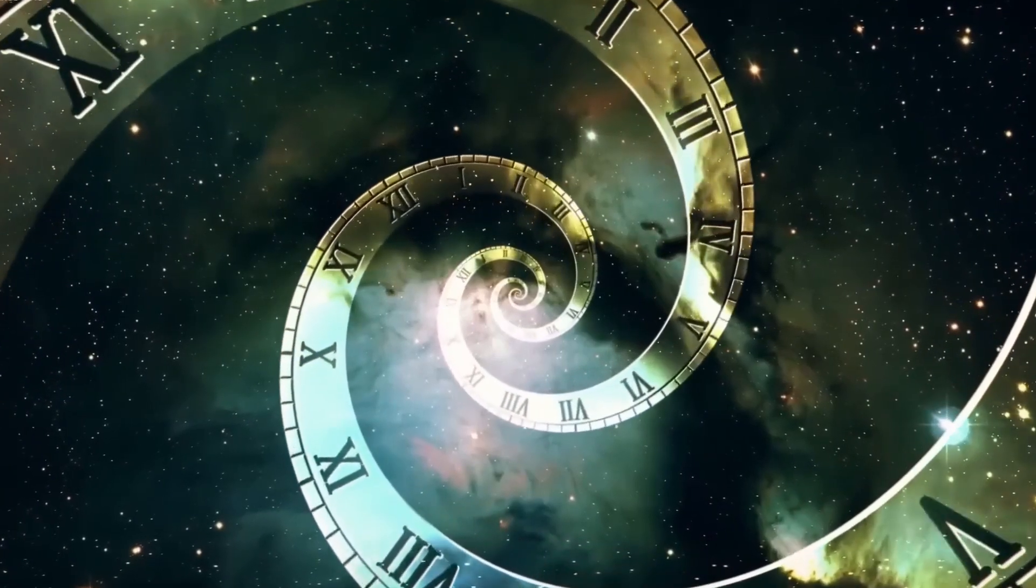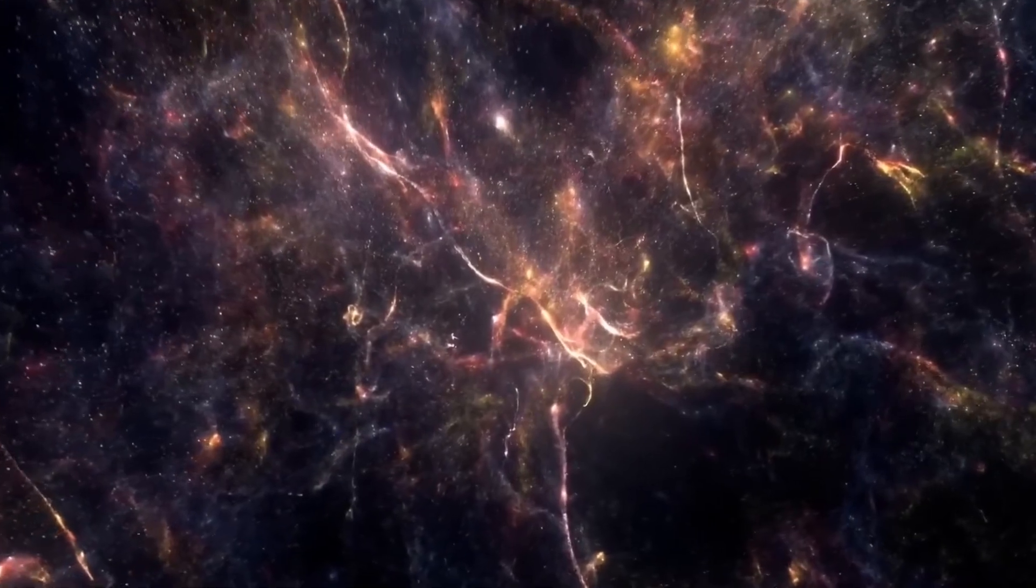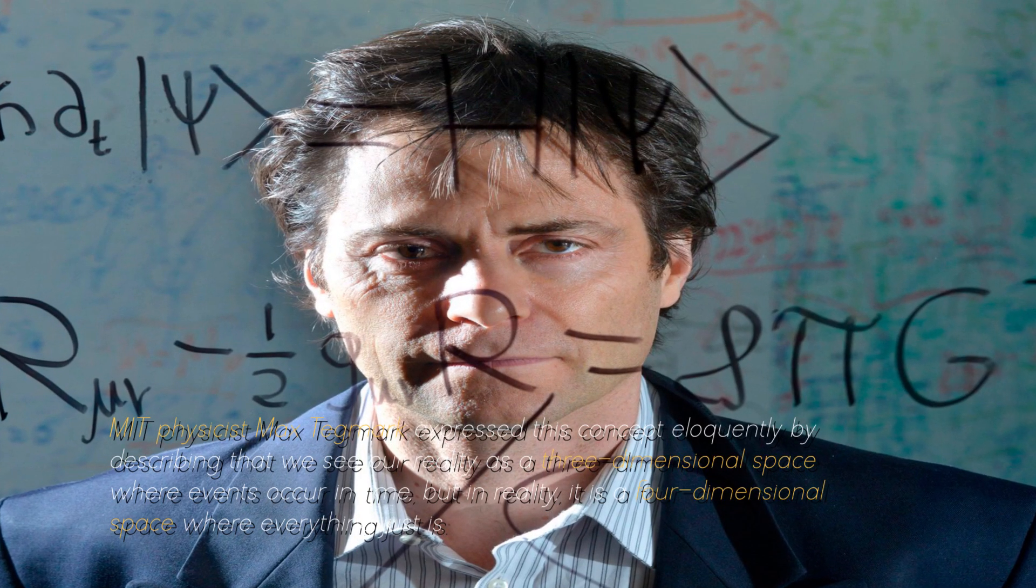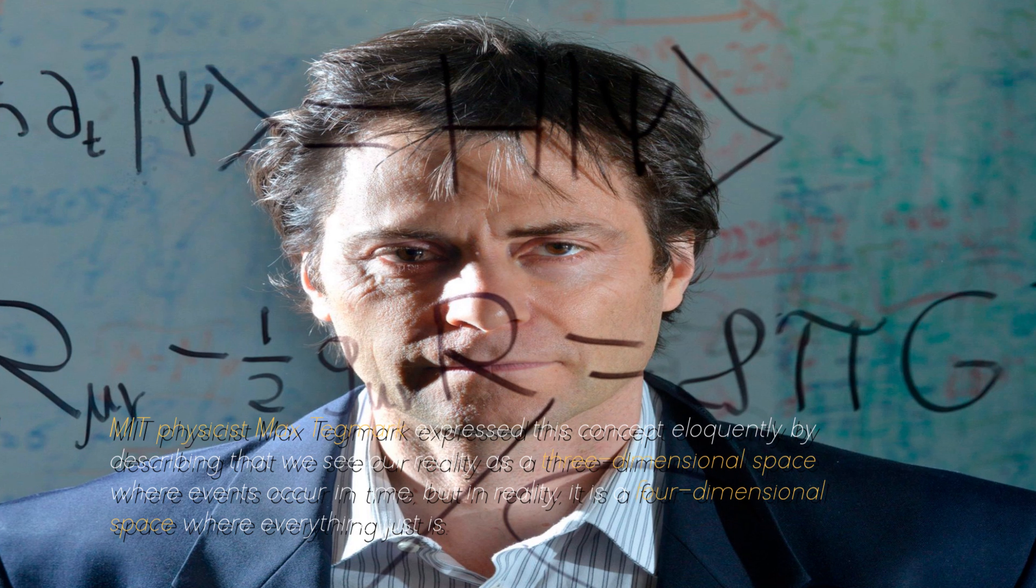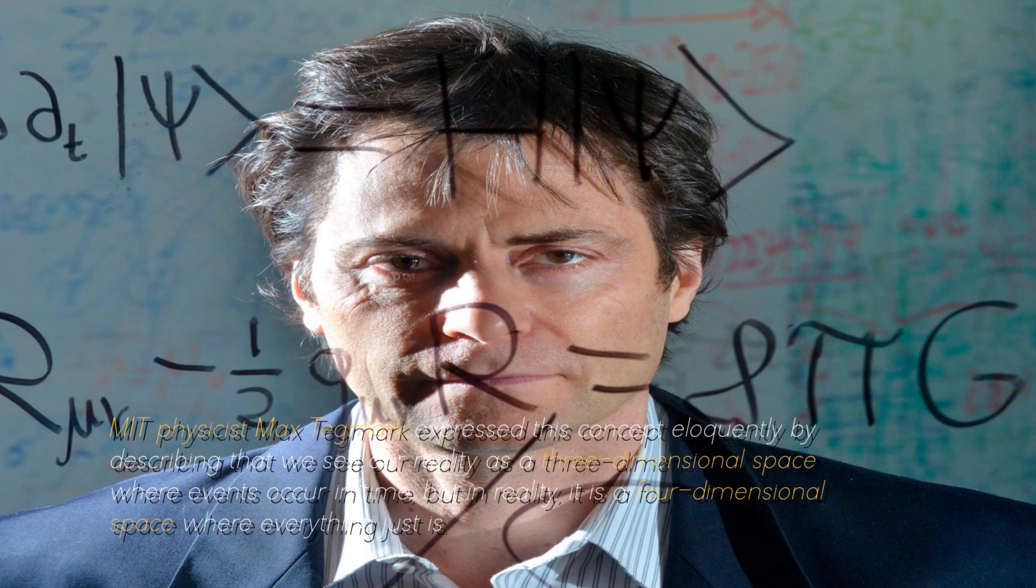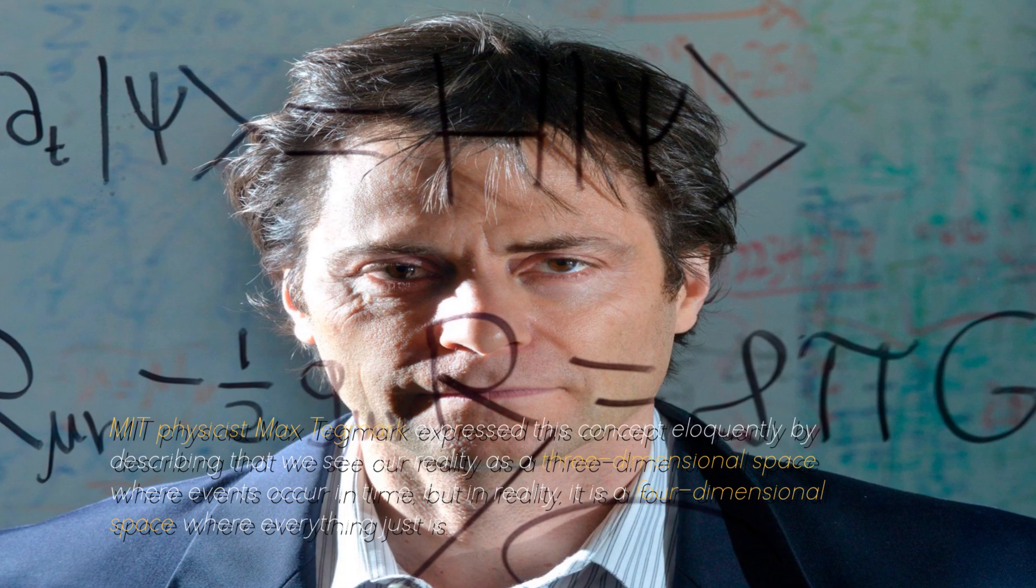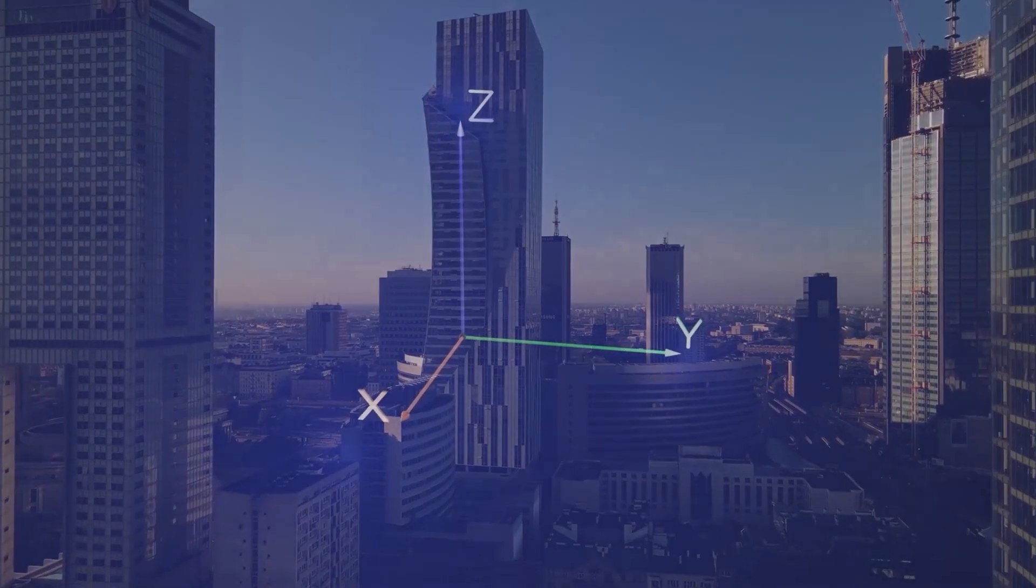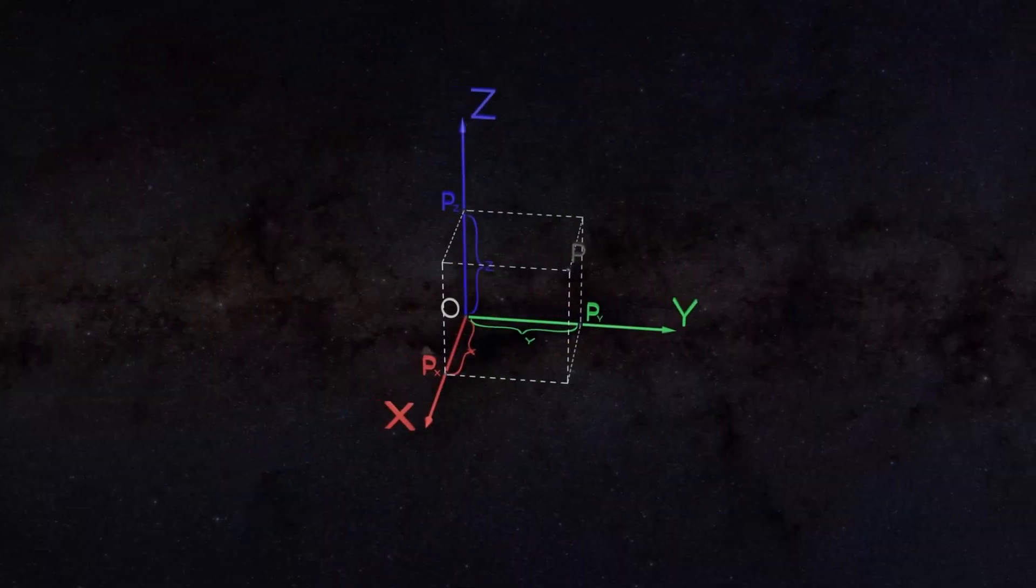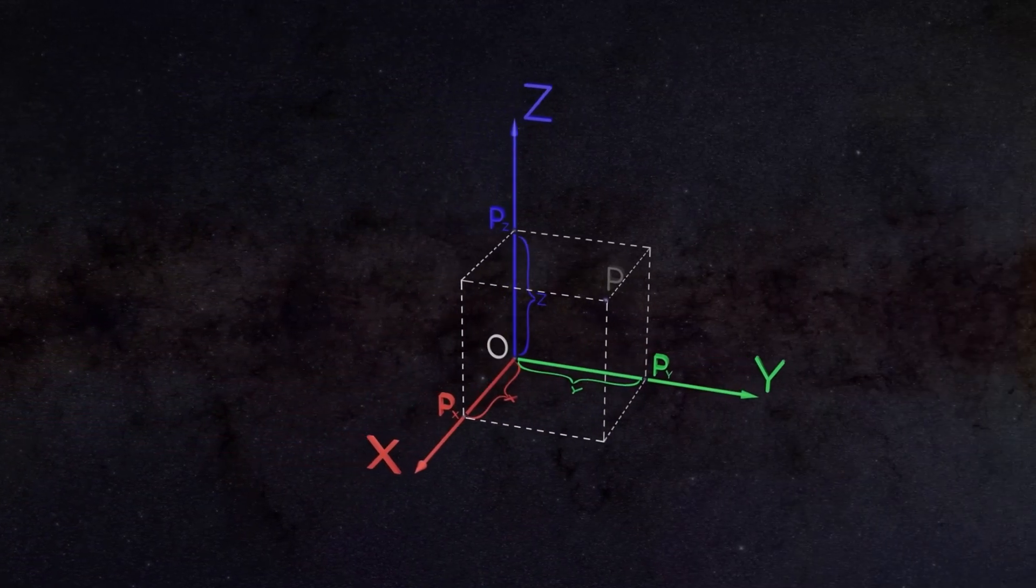So, what does this imply for us? In essence, it suggests that everything has a reality as solid as the present moment, and that the past and the future exist somehow somewhere in space-time. MIT physicist Max Tegmark expressed this concept eloquently by describing that we see our reality as a three-dimensional space where events occur in time, but in reality it's a four-dimensional space where everything just is. If this approach were true, then time would be revealed as an illusion, since nothing would undergo real change. Past, present, and future would coexist constantly.